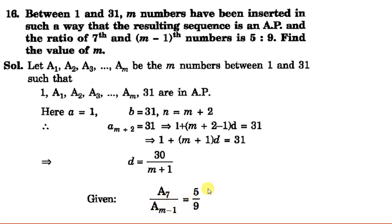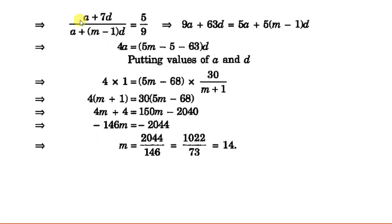The 7th inserted number is the 8th term of the sequence, so it equals a plus 7d. The (M minus 1)th inserted number is the Mth term of the sequence, so it equals a plus (M minus 1)d. The ratio a7 upon a(M-1) is given as 5 by 9. Cross-multiplying and putting a equals 1 and d equals 30 upon (M plus 1), after solving we get M equal to 14.